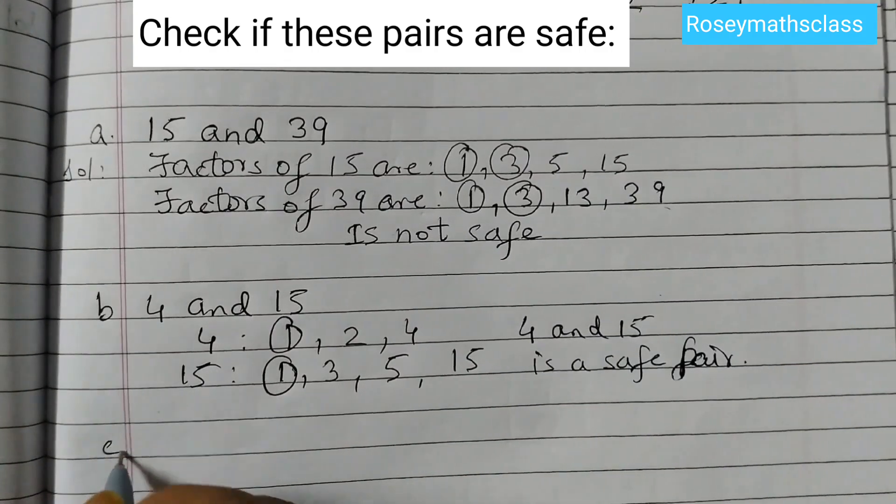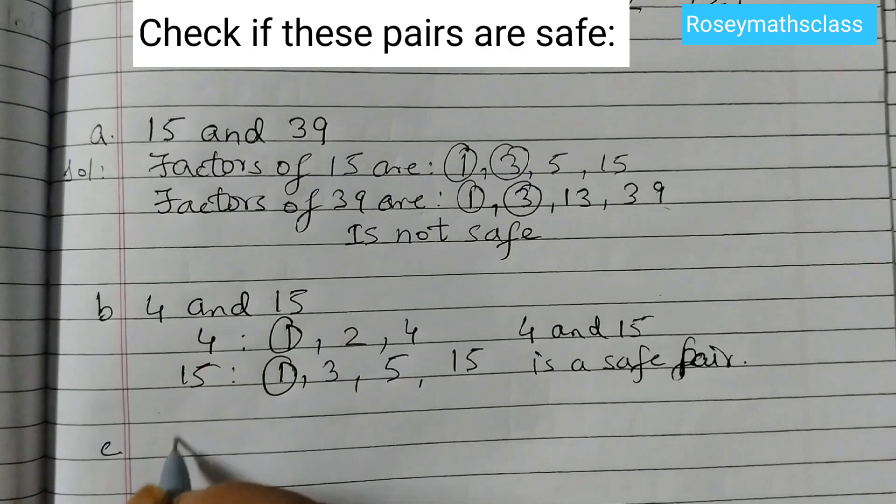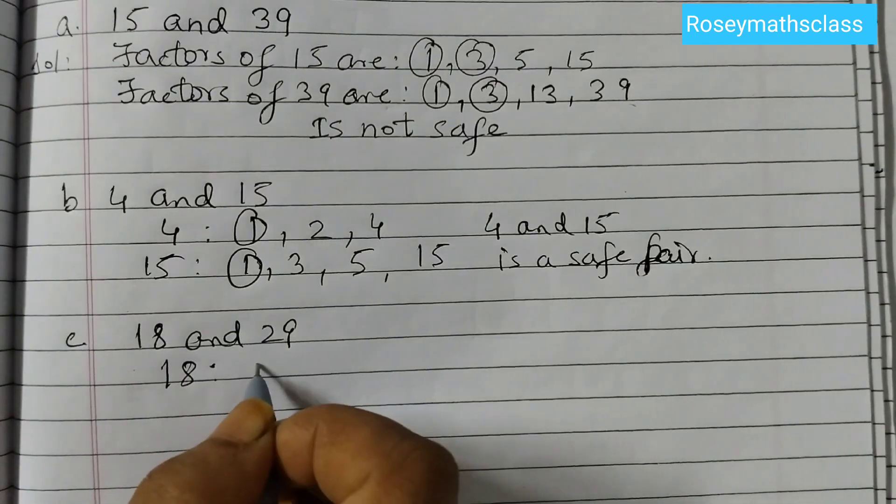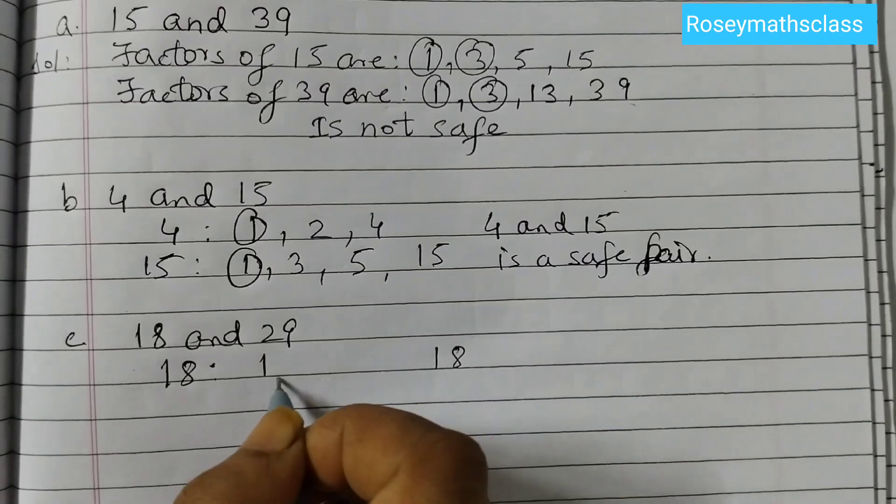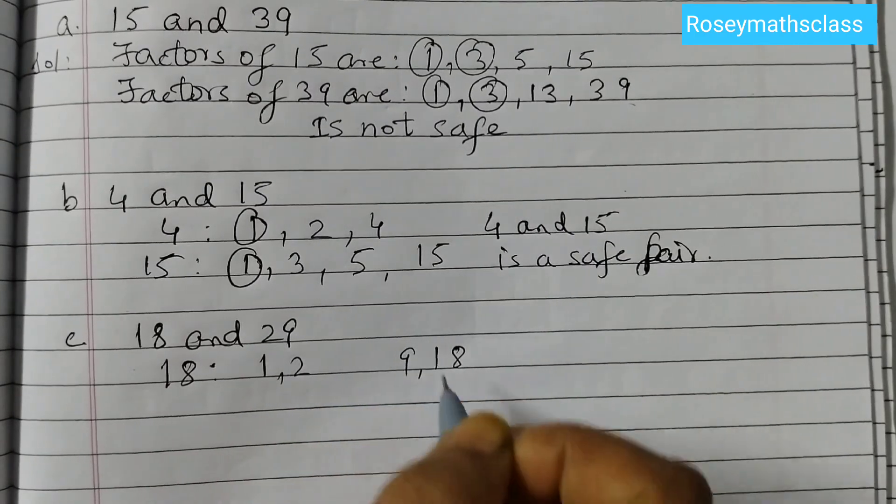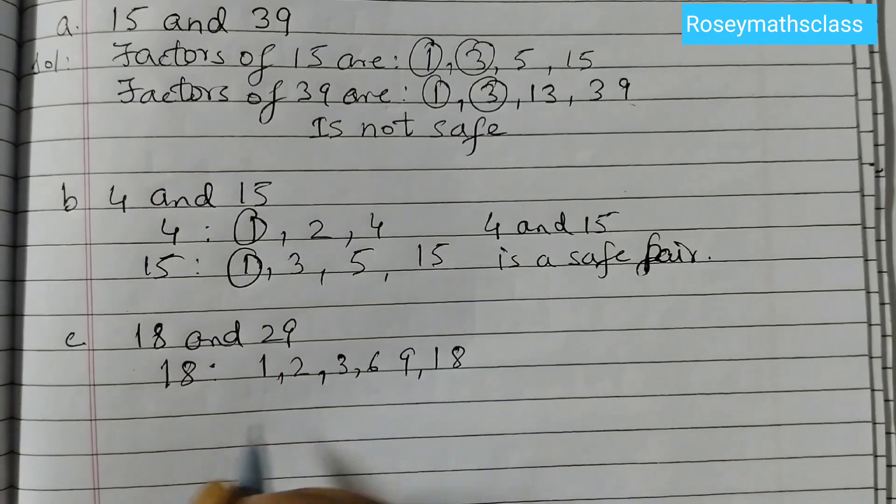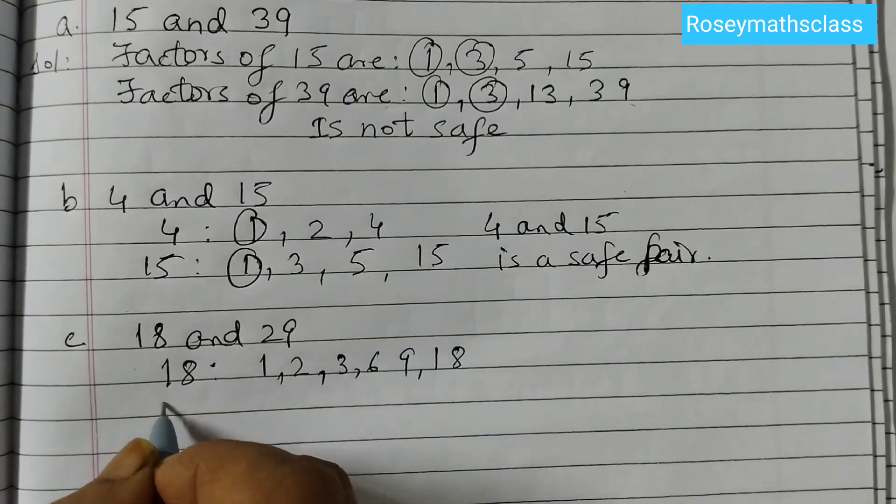Next one, C: 18 and 29. Factors of 18 are 1 times 18, then 2 times 9—this is how I find the factors—and 3 times 6. So these are the factors of 18.